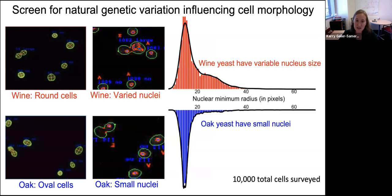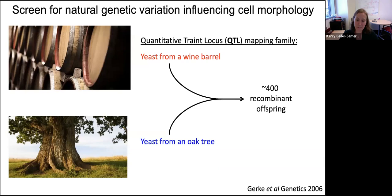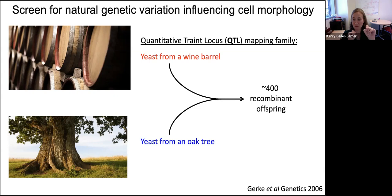Our goal was to conduct a QTL screen to look for the genetic basis of these morphological differences. The lab that isolated these strains had already made a QTL mapping family: they mated the wine yeast to the oak yeast to create an F1 hybrid, then sporulated it to create about 400 F2 recombinants, which they genotyped along the genome. To find a region of the genome contributing to morphological differences, you pick a region, bin strains by whether they inherited the wine or oak allele, and ask if there are morphological differences between those bins.